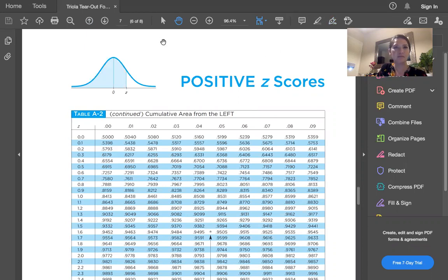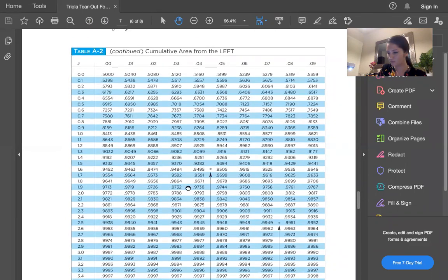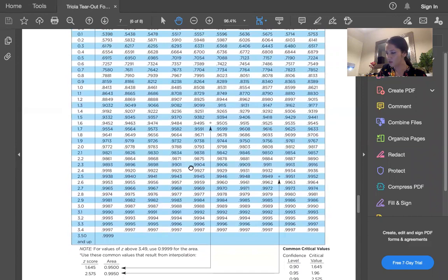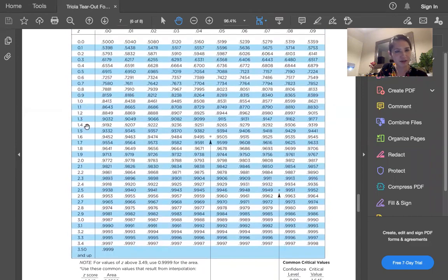Let me zoom in a little bit. Z equals 1.92, so we go down to 1.9, then 1.90, 1.91, and 1.92 is right there. That's our area to the left, and the area to the left is a probability. So that probability is 0.9726.